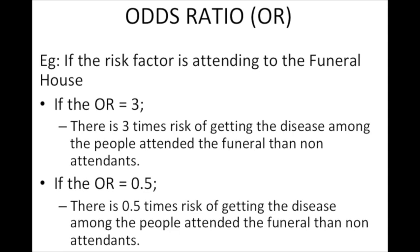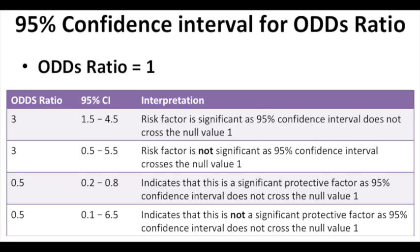A 95% confidence interval is essential to interpret the odds ratio. If the odds ratio is 1, it means equal risk. If the 95% confidence interval crosses the value 1, the odds ratio is not significant regardless of how large it is. In the example table, the first and third odds ratios are significant, while the second and fourth are not.